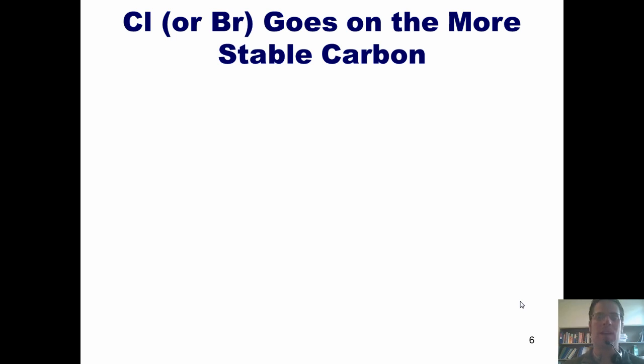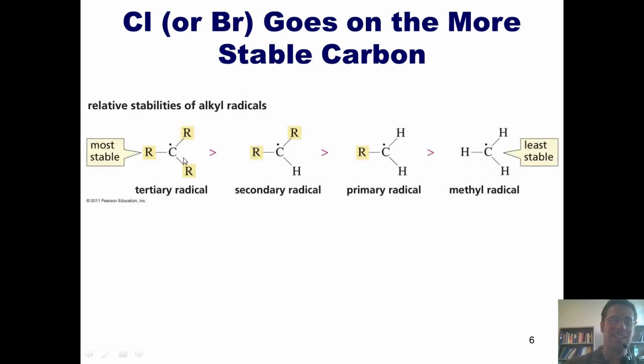Now, just as we've seen with carbocations, different radicals have different levels of stability. And in fact, they follow the exact same trend. I've taught you in the past that tertiary carbocation ions are more stable than secondary carbocation ions, which are more stable than primary carbocations, which are more stable than methyl carbocations. Now, I've told you in the past that methyl carbocation ions and primary carbocation ions are so unstable that they essentially don't really exist, except possibly in interstellar space. That is not true of methyl and primary radicals. They are more stable than methyl or primary carbocation ions, and hence can exist transitorally in certain circumstances.